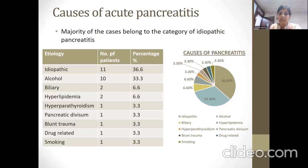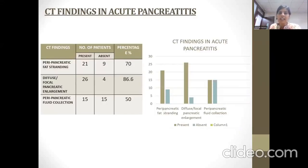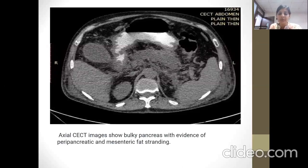The least common causes were hyperparathyroidism, pancreatic blunt trauma, drug-related, and smoking. CT findings in acute pancreatitis: peripancreatic fat stranding was present in 21 cases (70%) and absent in 9 cases. Diffuse or focal pancreatic enlargement was seen in 86.6% of cases. Peripancreatic fluid collection was seen in 50% of cases. A CT scan image shows a bulky pancreas with evidence of peripancreatic and mesenteric fat stranding.